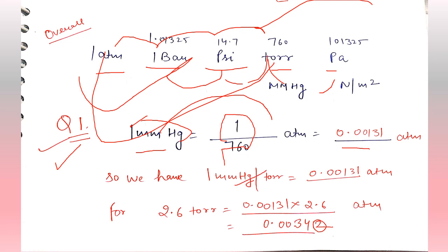Now converting 2.6 torr to atm. From above we know that 1 torr equals 0.00131 atm. Simply multiply 0.00131 by 2.6.